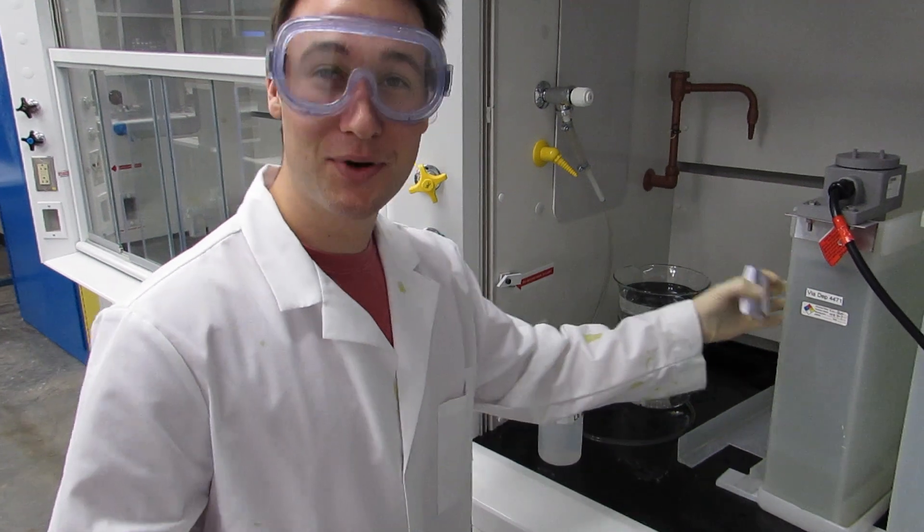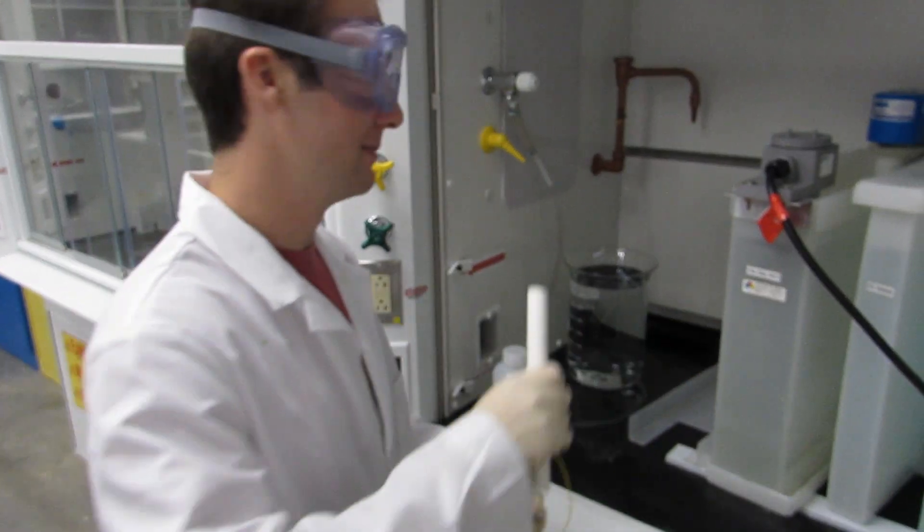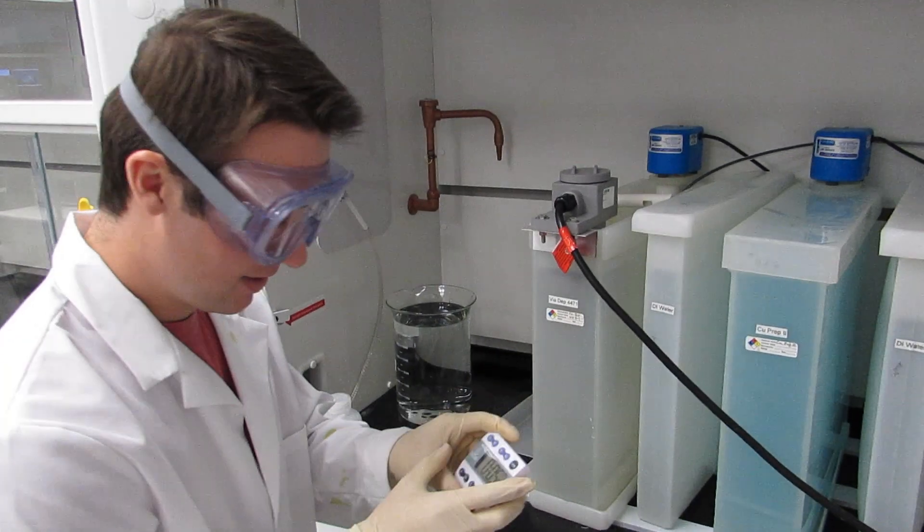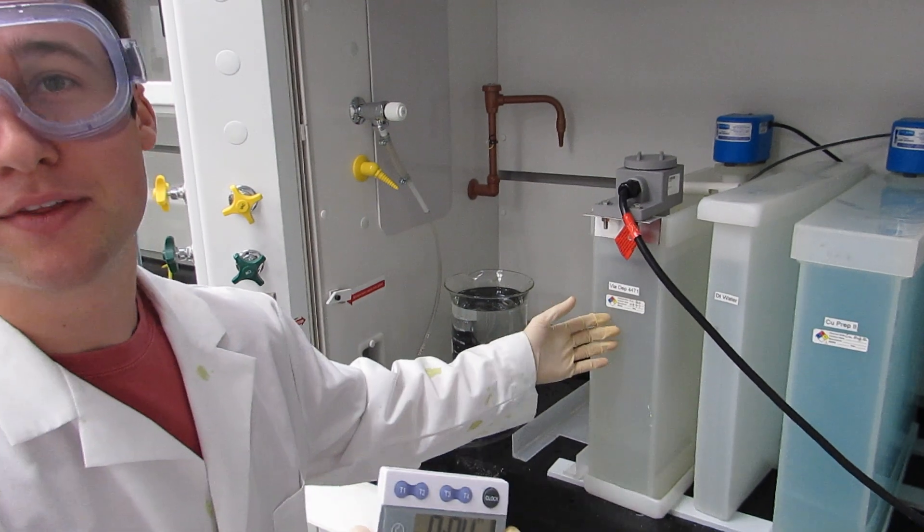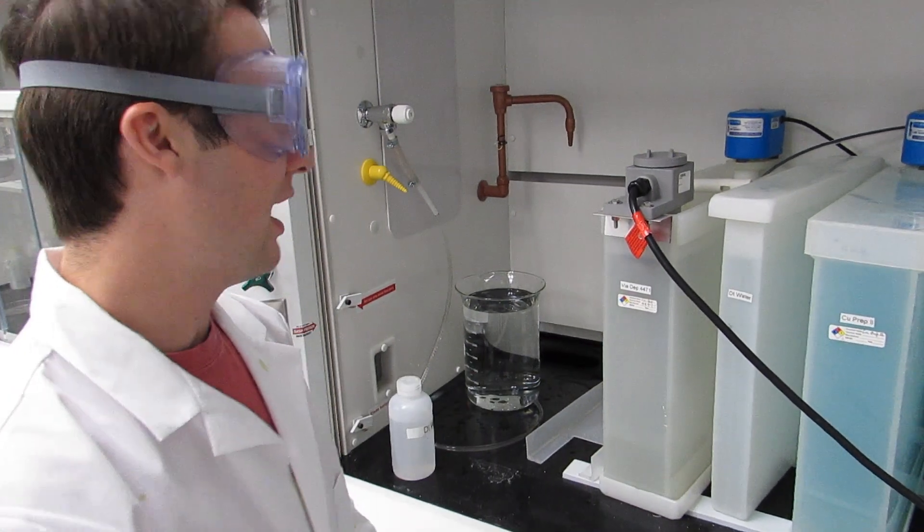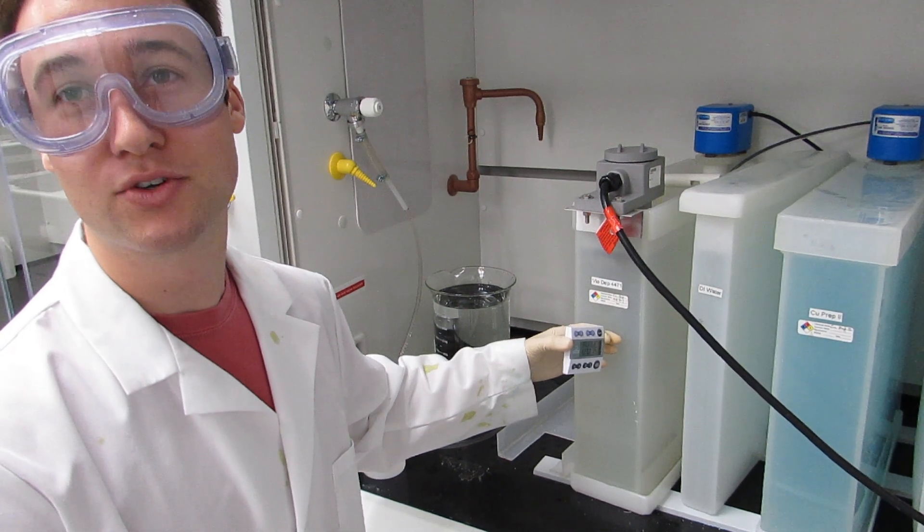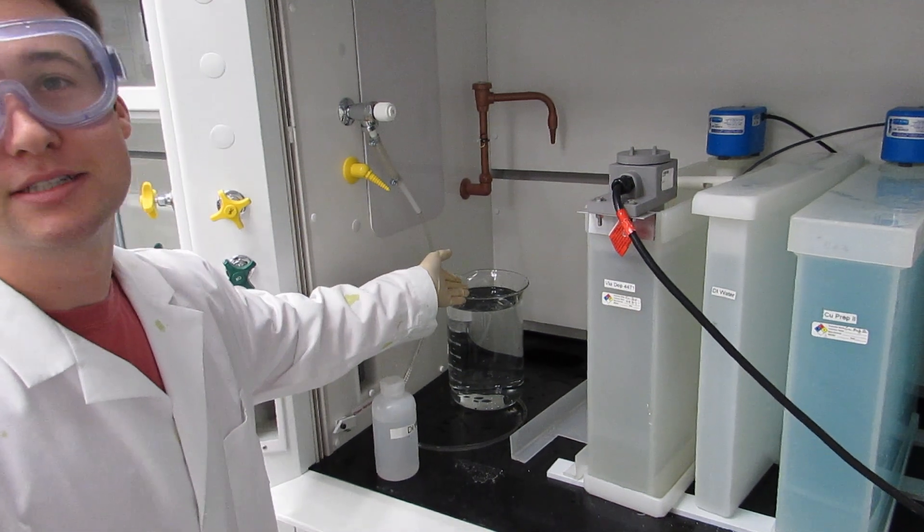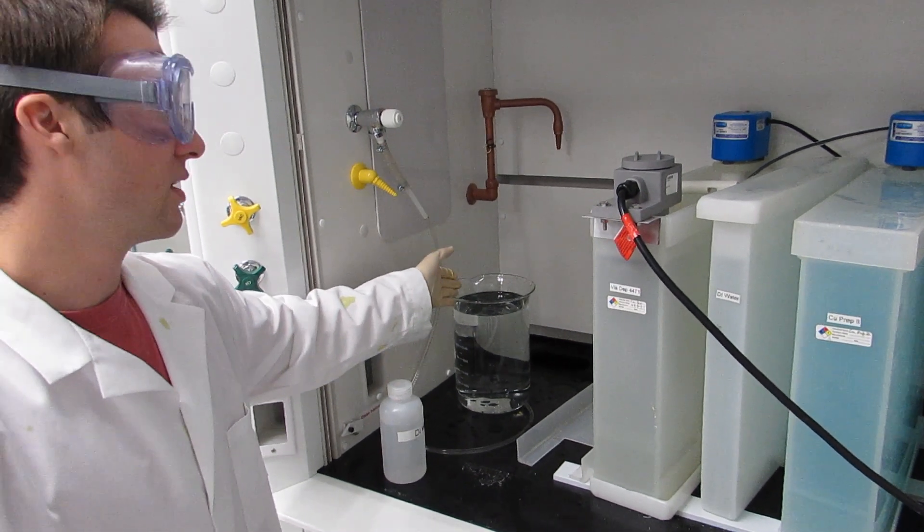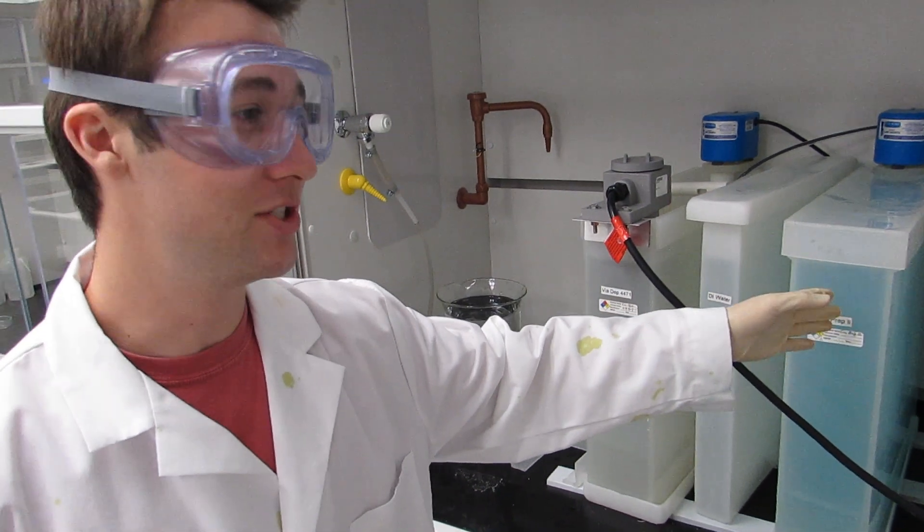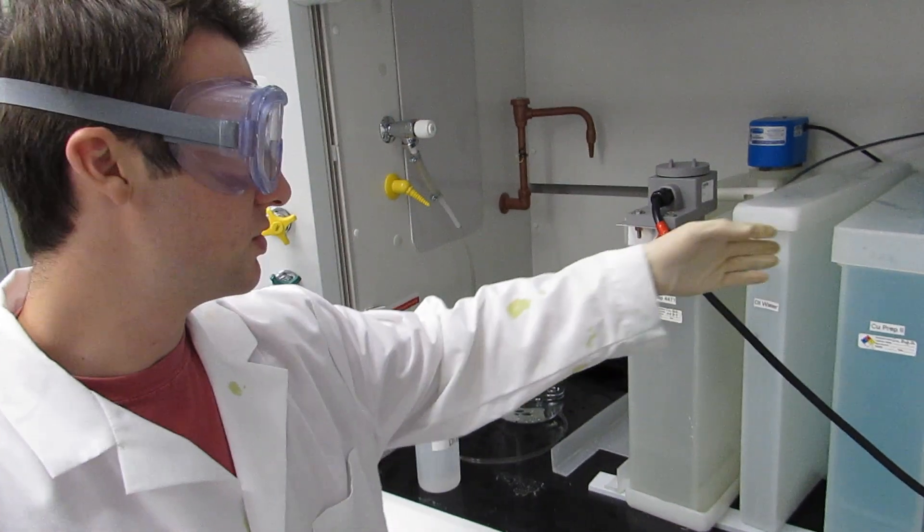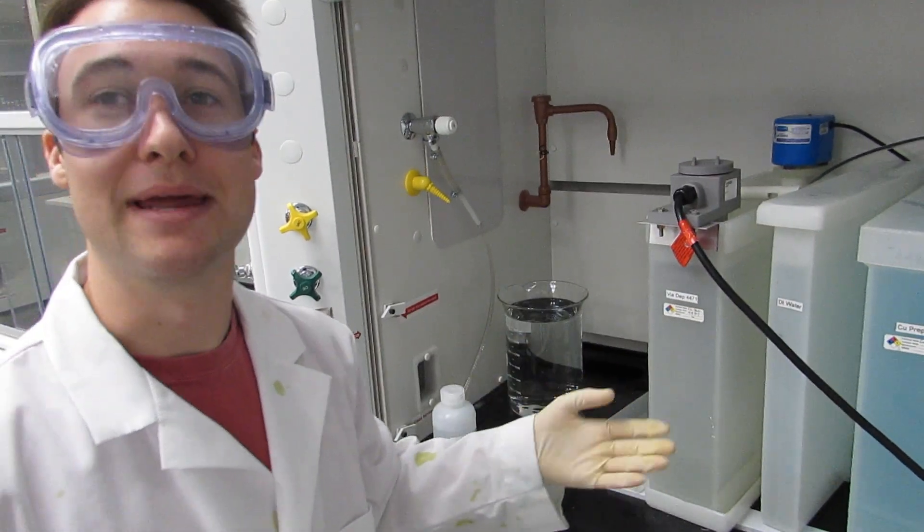Okay, so we're going to put this in the via depth, which is just soapy water. We set the timer for five minutes to ensure that the entire board is cleaned. Ideally this will be at 125 degrees Fahrenheit. Then afterward we will soak it in some deionized water for about a minute, and then into the CU prep, which is acid, for about another minute, and then soak it off in the deionized water for another minute. Then our board cleaning is almost done.